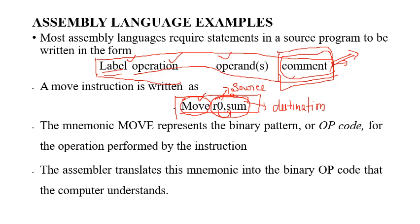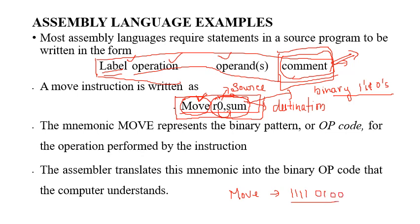This particular format is user-readable, but the processor will not understand this format. Instead, we need to convert this program to binary representation — that is, represented in the form of ones and zeros. For example, 'MOVE R0, sum' has to be converted to its equivalent ones and zeros. Each mnemonic compatible with a particular processor will have a corresponding binary representation. For example, MOVE might be represented as 11110100; this is the binary equivalent. Each mnemonic is represented by a unique number called the opcode.